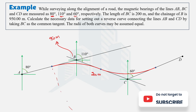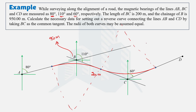Both curves share a common radius R. To set out the reverse curve — which consists of two circular arcs — we need the deflection angle of both curves and the chainages at key points: T1 (start of first curve), T2 (common point / point of reverse curve), and T3 (end of the reverse curve).